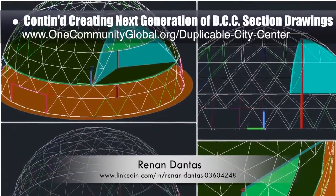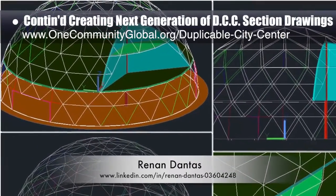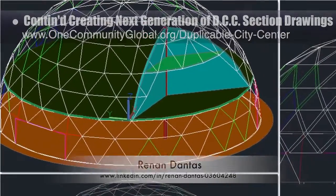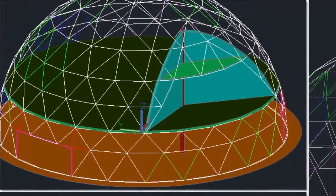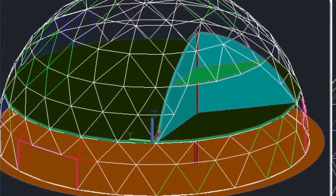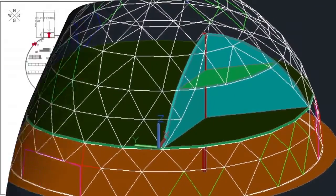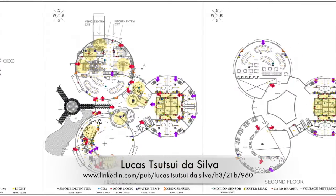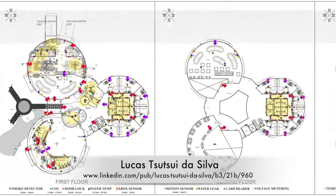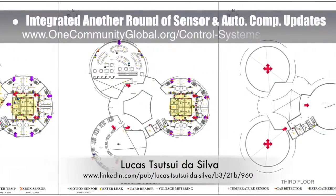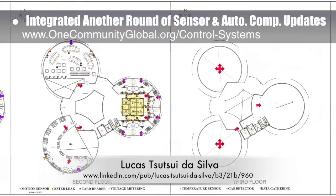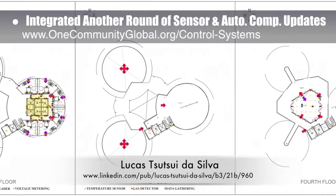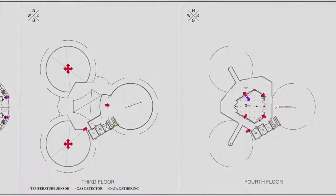Hannon Dantes, mechanical engineer, continued his eighth week working on the duplicable city center AutoCAD updates — this week's focus was 3D updates and design details to match the mezzanine level to the new geometry of the dome. Lucas de Souza da Silva, fourth-year computer engineering student, also finished integrating another round of sensor and automation component updates for the control and automation systems layout, as shown here.